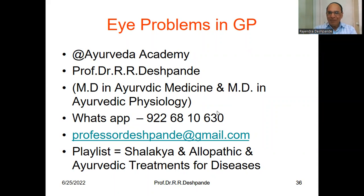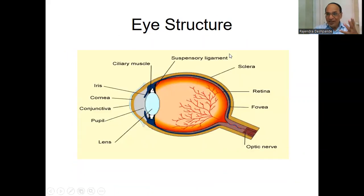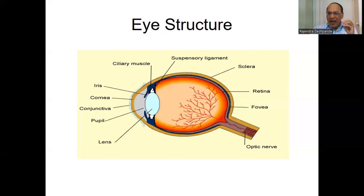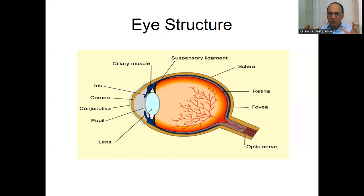I am MD in Ayurvedic Medicine and MD in Ayurvedic Physiology. My WhatsApp number for communication is 9226810630. My dear friends, before starting the diseases, I have already uploaded two parts of this series, and this is the third and last part. I have taken into account only a few but very important diseases that occur in general practice related to the eyes.